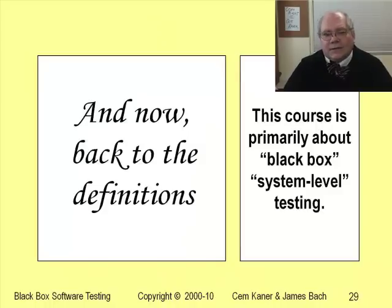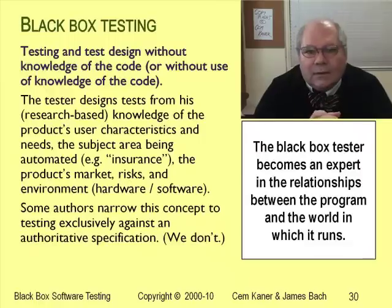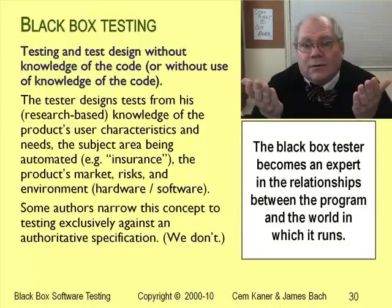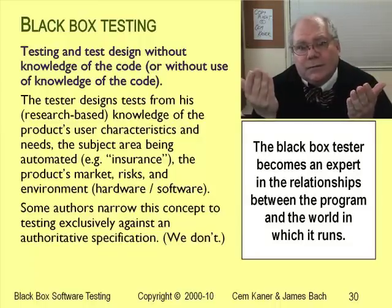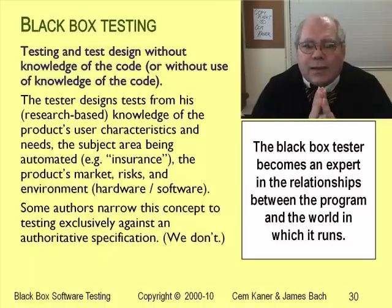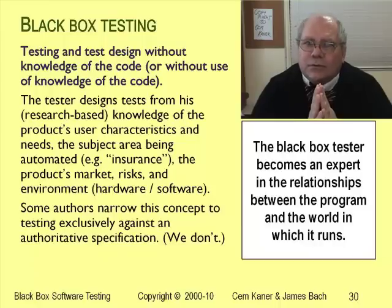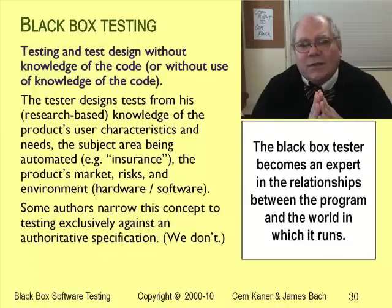This course is about black box testing at the system level. Historically, before computers and software ever existed, people talked about studying devices as black boxes. The notion of a black box is the notion of a closed thing — you can't look inside it to see how it works. Instead, you give it inputs like pressing its buttons and you watch what happens. When we do black box testing, we don't learn how the program was coded; we just know what it does. What we learn from black box testing is whether the program does what it should do and avoids doing what it shouldn't. To understand what the program should do, we have to study the needs and expectations of the people who use it, the characteristics of the systems that will interact with it, and the regulations that will govern it.